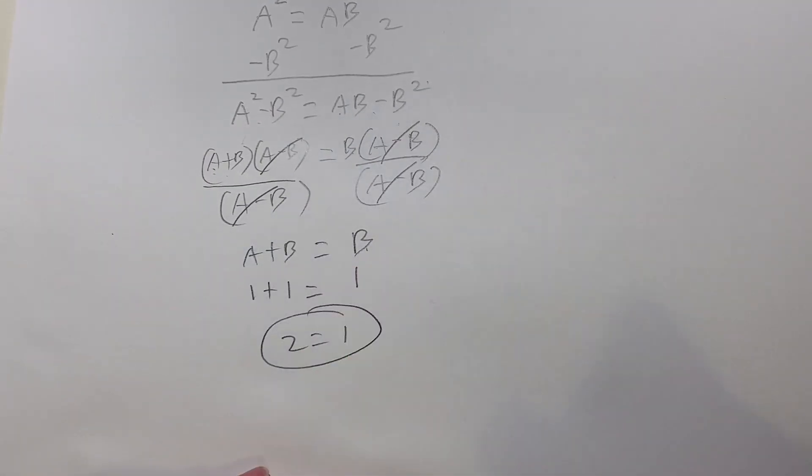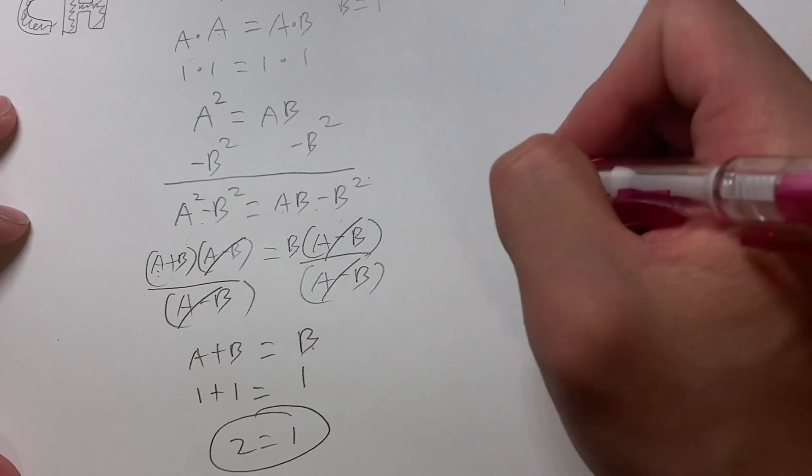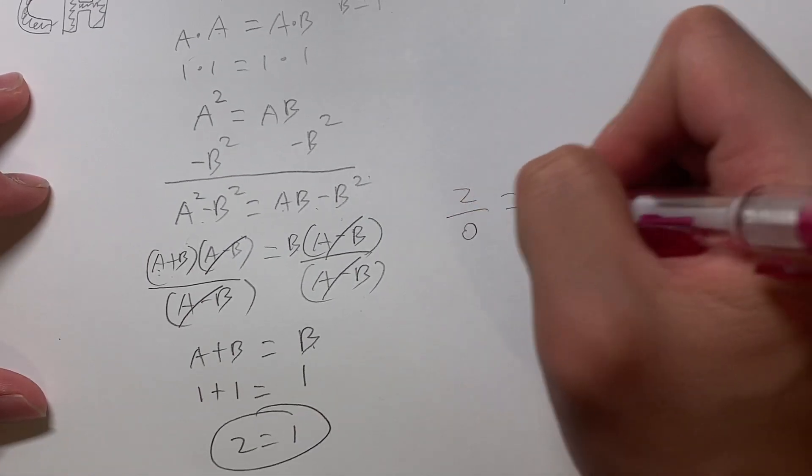So how does this happen? So this happens because of a special property called dividing by 0. As you guys know, in mathematics, if you divide by 0, any number, so for example, I have 2 divided by 0. What is this equal to?